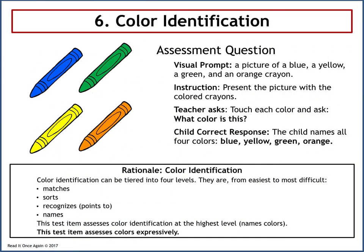Assessment question 6 relates to color identification. The visual prompt is a picture of a blue, yellow, green, and orange crayon. The teacher touches each color and asks: What color is this? The child's correct response is to name all four colors — blue, yellow, green, orange. The rationale: color identification can be tiered into four levels from easiest to most difficult — matches, sorts, recognizes or points to, and names. This test item assesses color identification at the highest level — names colors — and assesses colors expressively.